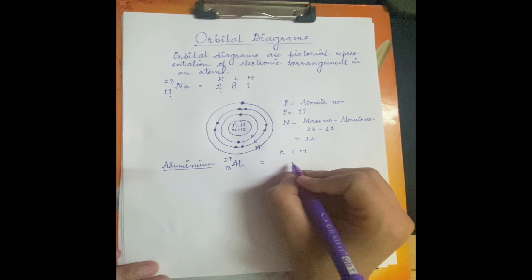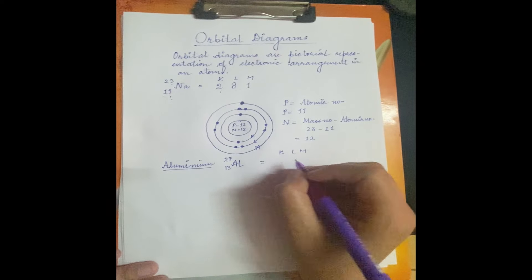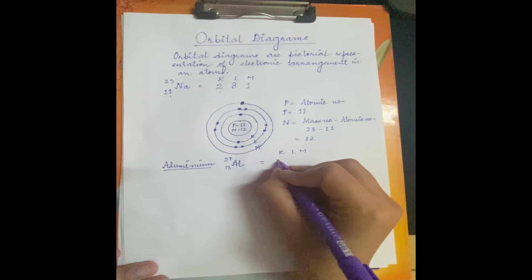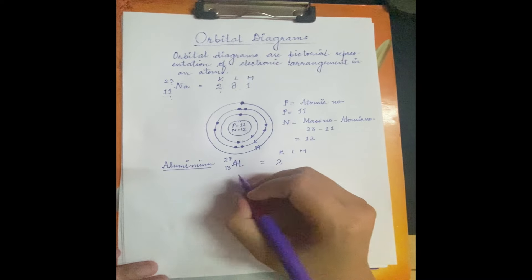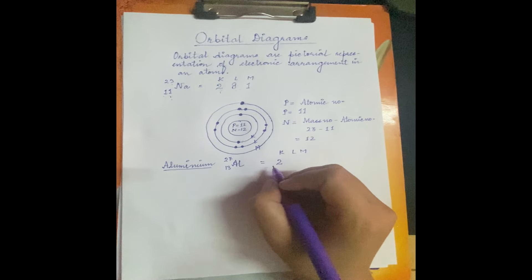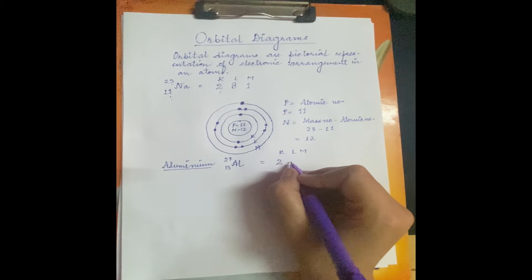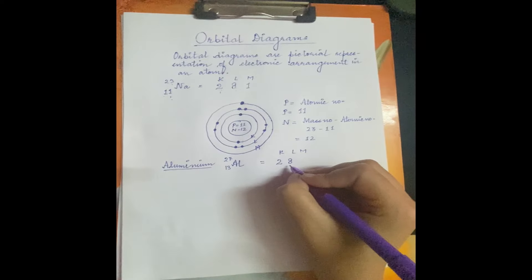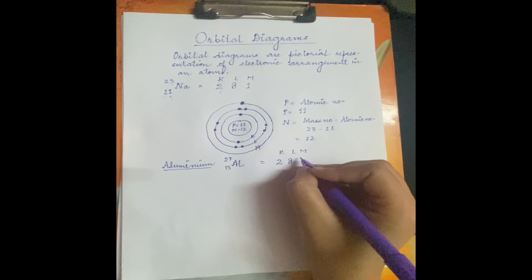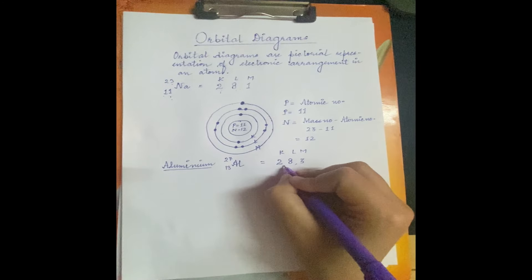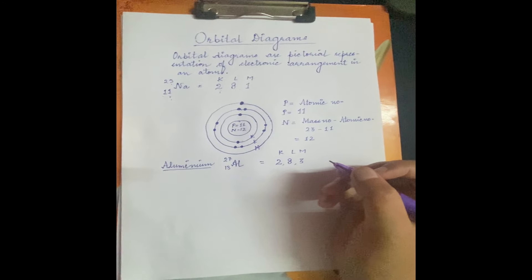For aluminium's electronic configuration, we need to distribute 13 electrons into 3 shells. First shell always gets 2 electrons. 13 minus 2 leaves 11. L shell (second shell) always gets 8 electrons. 10 electrons are now placed, leaving 3 electrons for the last shell. So electronic configuration of aluminium is 2, 8, 3.